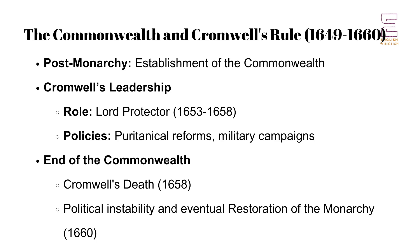The execution of Charles I led to the establishment of the Commonwealth, a republican form of government that lasted until 1660. Under the leadership of Oliver Cromwell, England experienced a period of military rule and puritanical reform. However, the Commonwealth struggled with internal divisions and widespread dissatisfaction, leading to its eventual collapse and the restoration of monarchy in 1660.